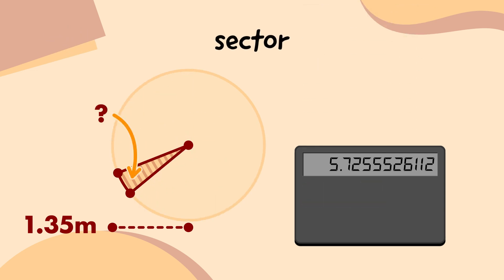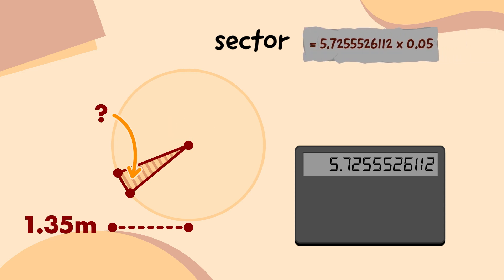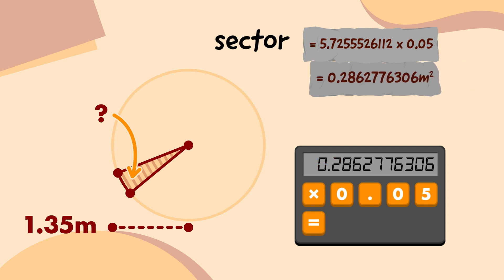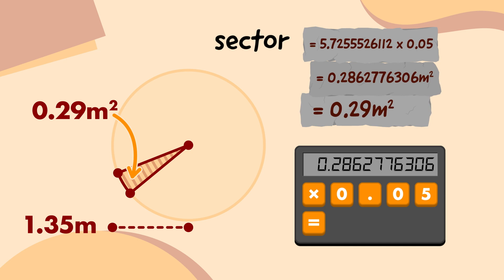Remember, this part of the circle is 0.05 times as big as the whole circle. So I'm going to multiply that by the area. I'll press the multiply button, type 0.05, and press the equals button, which gives me 0.2862776306. That means the area of this sector of the first emblem circle is 0.29 square metres.